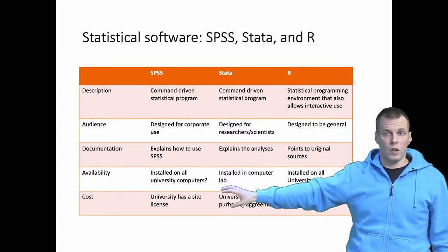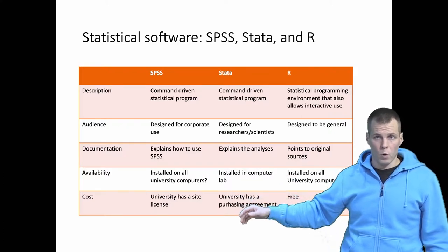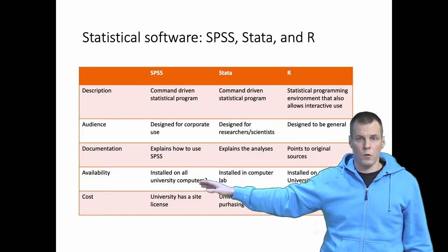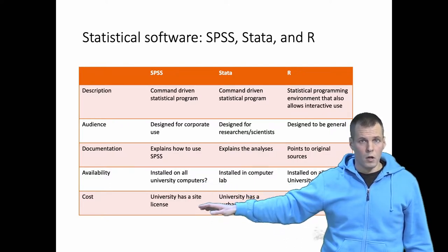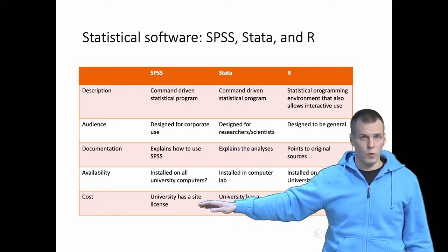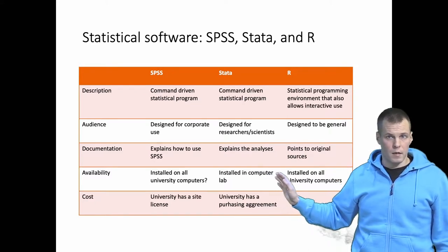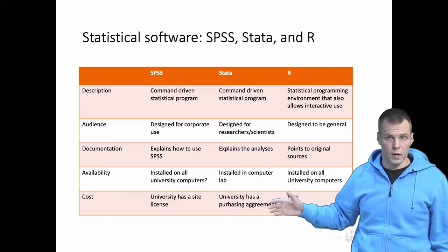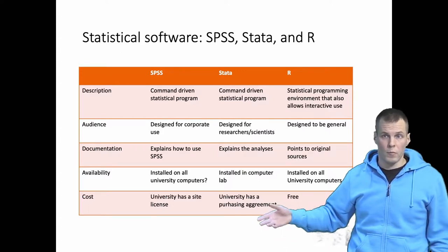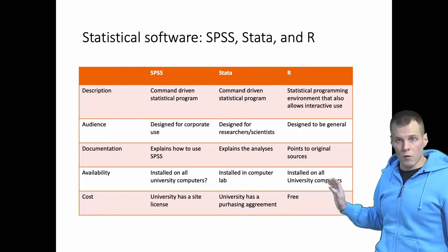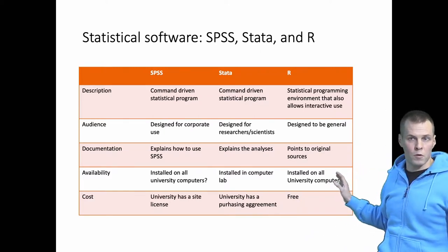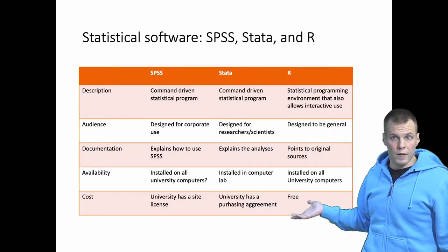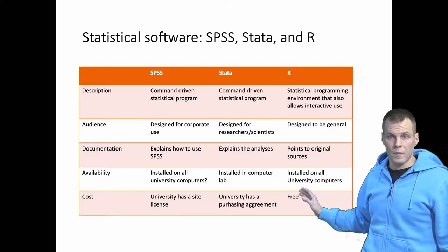The availability of these software differs as well. Most universities have a site license for SPSS, meaning it's installed on all university computers and students can typically install it on their home computer. Stata doesn't have such a licensing agreement — it's usually installed in a computer lab, and getting it on a home computer is less straightforward. R is open source, typically installed on all university computers, and it's free — you can just download R and the RStudio editor, which is highly recommended, on your own computer at no cost.